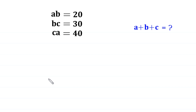Hello everyone, you are welcome to how to solve this very nice system of equations. AB is equal to 20, BC is equal to 30 and CA is equal to 40. We need to find the value of A plus B plus C. So let us start.